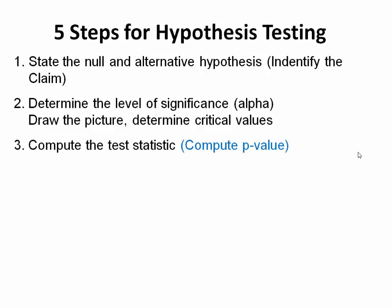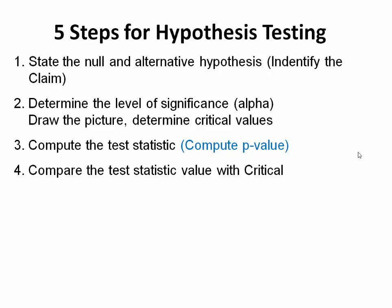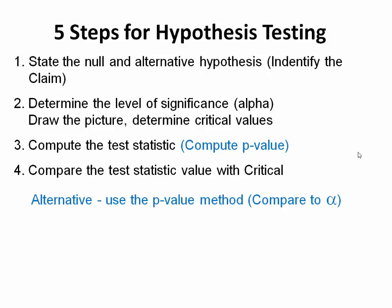In step three, we're going to compute the test statistic. After we compute the test statistic, then we're going to be able to compute the p-value. Step four, we're going to compare the test statistic with the critical value. As an alternative, we're going to use the p-value method and compare it to alpha.